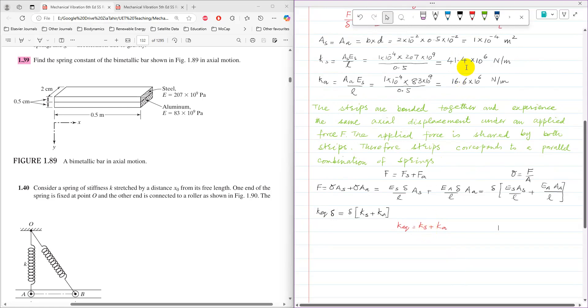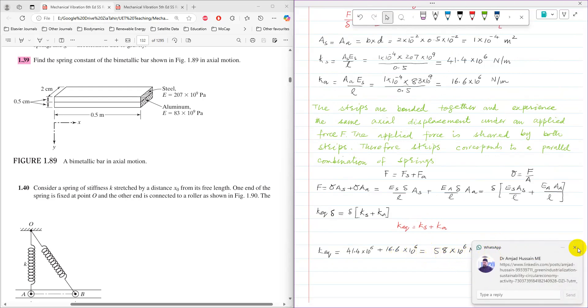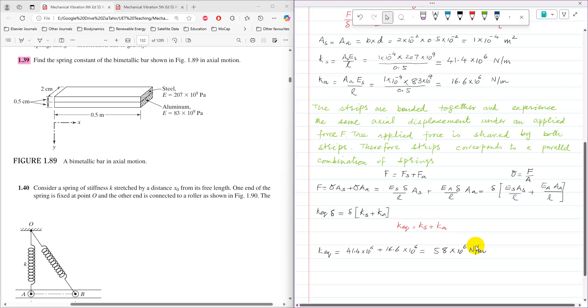Substituting the values of K_s and K_a, K_equivalent equals 41.4 plus 16.6, which equals 58 times 10 to the power 6 N/m.